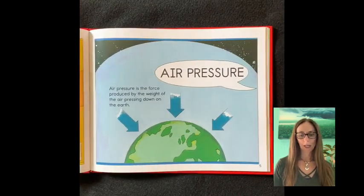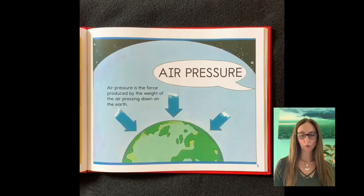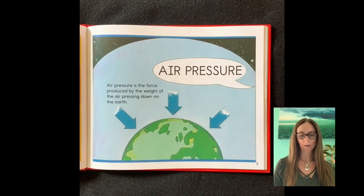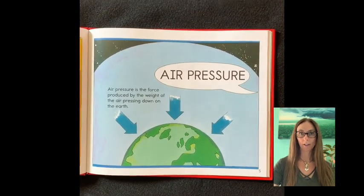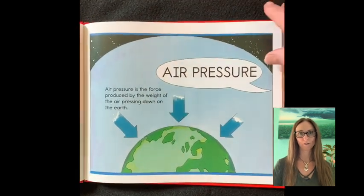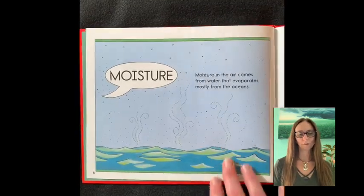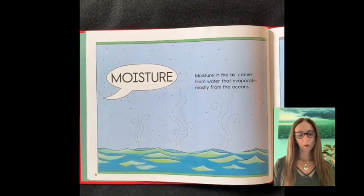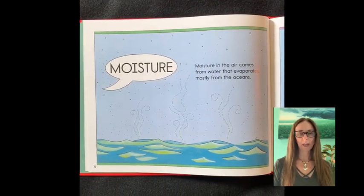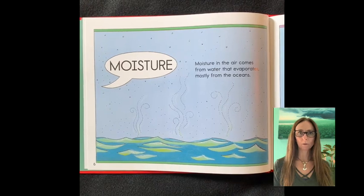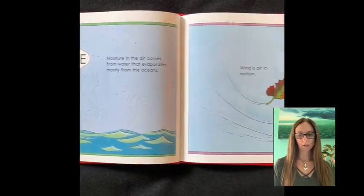Air pressure is the force produced by the weight of the air pressing down on the earth. Moisture in the air comes from water that evaporates, mostly from the oceans.